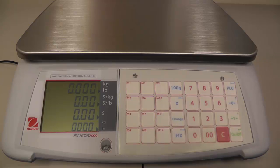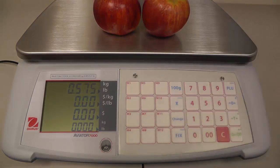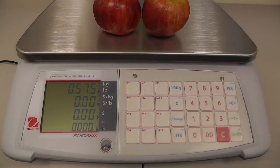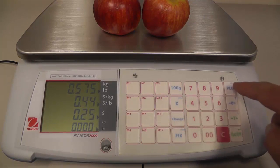So now when this customer comes up to buy the apples, instead of entering the price per pound, all we need to do is place the items on the scale and then press the 44 that we saved it as and hit PLU.